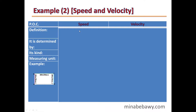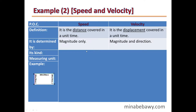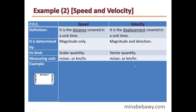Let's compare between speed and velocity. Speed is scalar; velocity is a vector. Speed is the distance covered in a unit of time. Velocity is the displacement covered in a unit of time. To determine speed, we need to know its magnitude only. For velocity, we need to know its magnitude and its direction. Speed is a scalar physical quantity; velocity is a vector physical quantity. Both are measured in meter per second or kilometer per hour.